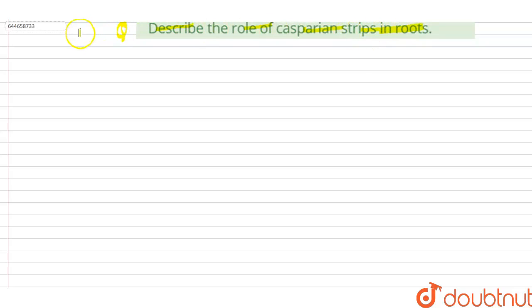So we have to find what are Casparian strips and what is their function. Casparian strips, these are the strip or a band of cell wall material found in the roots of plants.